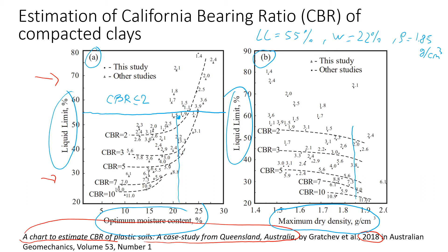Now looking at the second chart using maximum density: 1.85 grams per cubic centimeter plotted against a liquid limit of about 55 also gives a CBR of less than 2, which means this is pretty soft soil. Please use the chart, and if you want more information please read my paper. Thanks for watching and have a nice day.